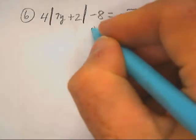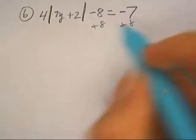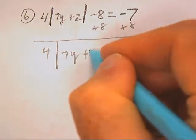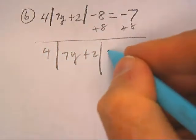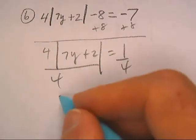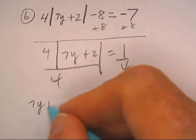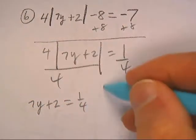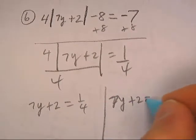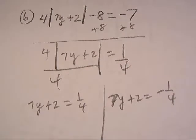Welcome back, here we go. Let's add 8 and I get 4 times the absolute value of 7y plus 2 equals 1. Let's divide by 4 and you're going to get 7y plus 2 equals one-fourth and 7y plus 2 equals negative one-fourth.